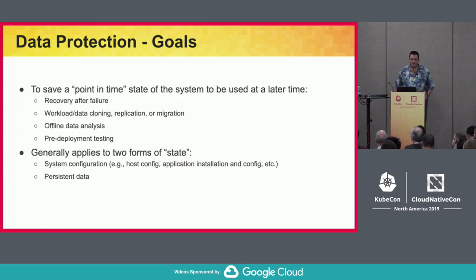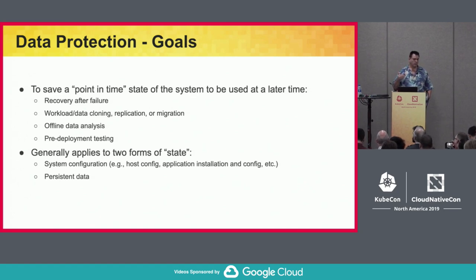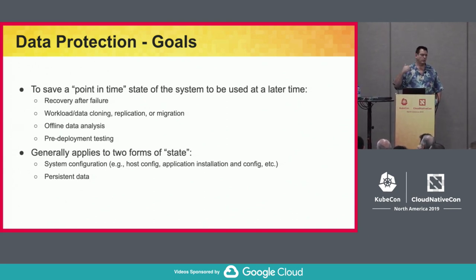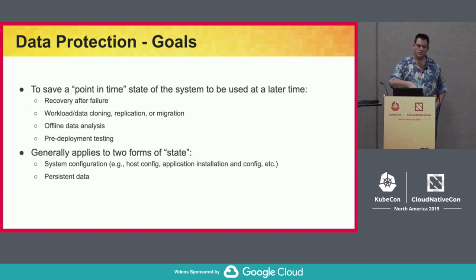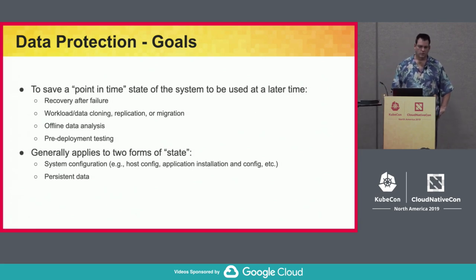The basic idea when we talk about data protection — and in particular the disaster recovery kind of mode — is this idea that you're saving a point-in-time view of the system that you could then use at a later date. There are many reasons: failure recovery, making copies of parts of your system, offline analysis so you don't impact systems, or testing a staging version against near-live data before deploying to production.